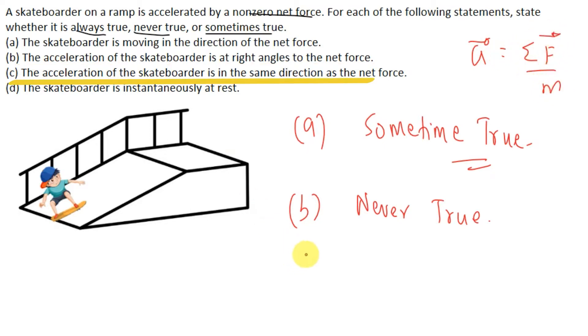Part C says the acceleration of the skateboarder is in the direction of net force. That is always true.